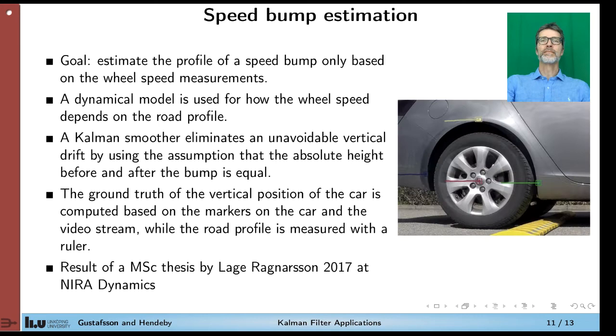Next example is for estimating speed bumps. We see an example here in the picture, an artificial speed bump. And an experiment where we pass the speed bump and measure the wheel speed. So the question is, can you actually characterize the speed bump just measuring the wheel speed, which is anyhow available in the automotive computer? Well, it is actually possible. You need a dynamic model for how the wheel speed depends on the road profile. That can be derived from mechanical equations. We can apply a Kalman smoother. And the problem here is that we might get drift. But if you assume that the road is level, so the height is the same after the hump as before, we get a constraint on the state.